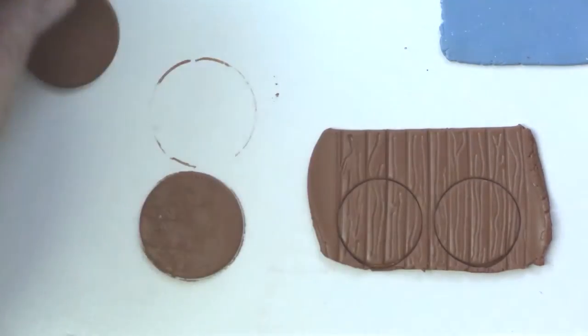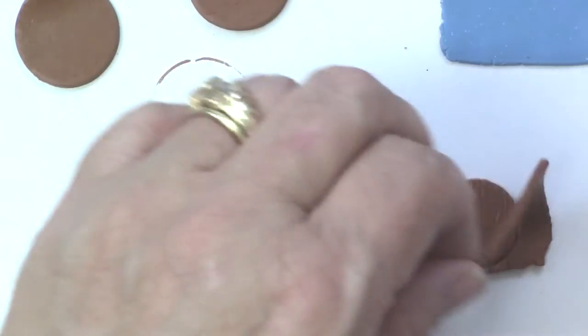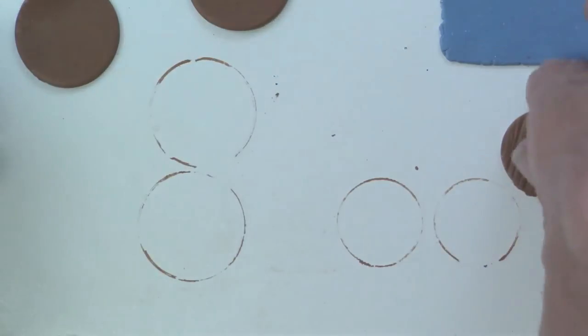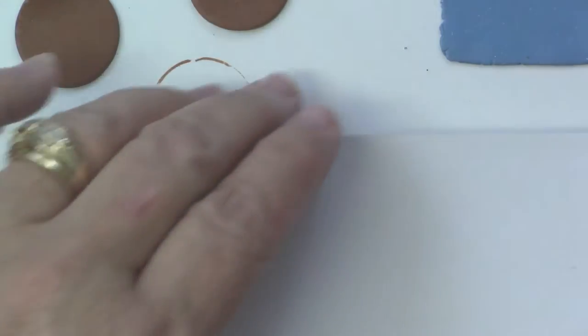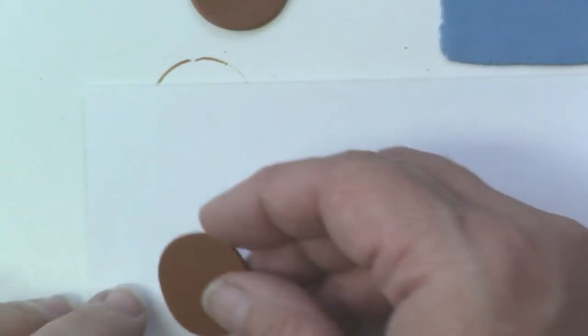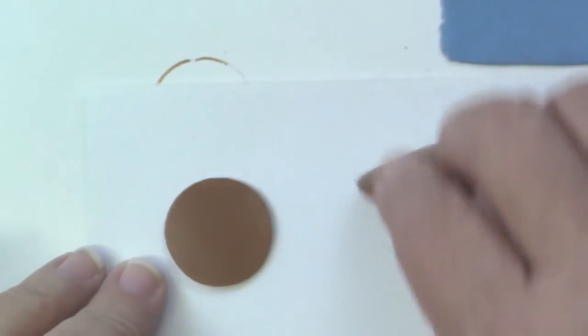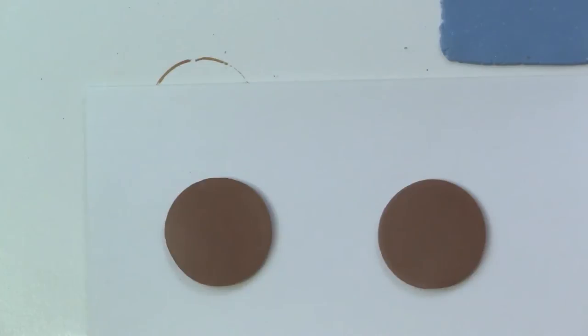I'll put the textured side on a piece of cardstock. It'll be easier to transport these to the oven once you've got them on cardstock. Put the larger circle down with the textured side down because that'll be the back of our earrings.